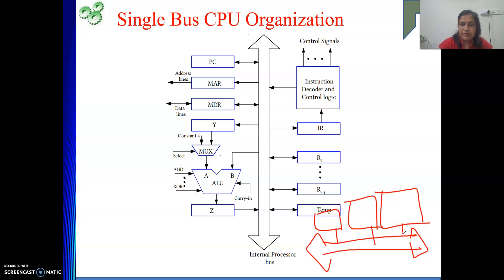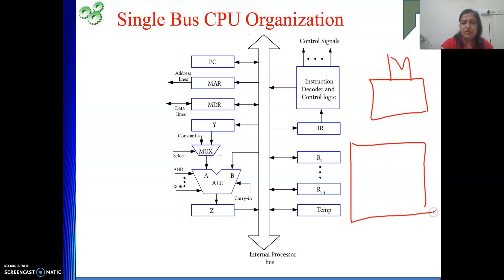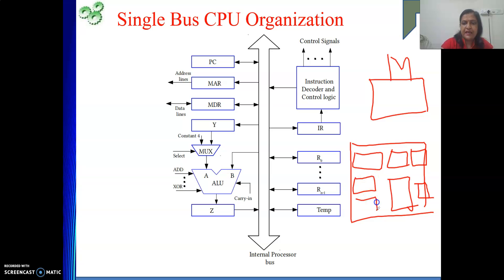That bus was connecting external components that comprise our computer system. Here in our single bus CPU organization, we will take one big set of wires that will connect all the components present inside your CPU. Hope you remember when we discussed basic operational concepts, we drew one diagram. This was my memory and then one rectangle kind of box. We drew MAR, MDR, then your control unit, set of registers, ALU, IR, PC and all were there. So all these components are present inside the CPU.